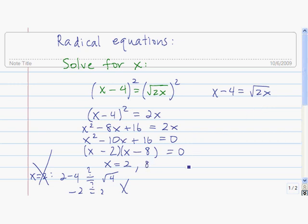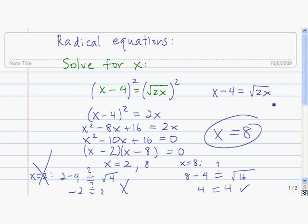Now we check x equals 8. Plug it into the left side, and we want to know if it's equal to what we get when we plug it into the right side. 2 times 8 is 16. 8 minus 4 is 4. The square root of 16 is 4. So it checks out. So it means x equals 8 is the only solution to our equation.